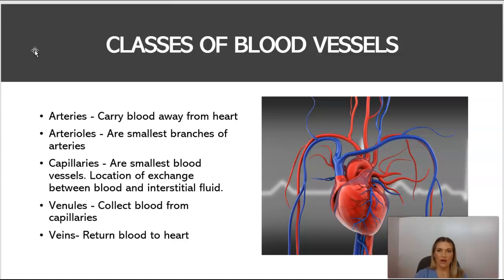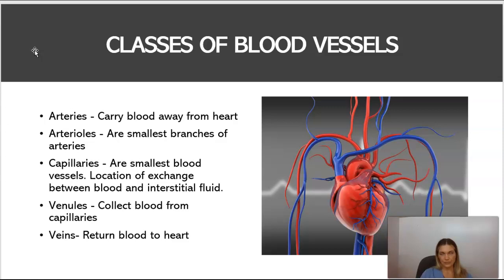Classes of blood vessels: arteries carry blood away from the heart. Arterioles are the smallest branches of the arteries. Capillaries are the smallest blood vessels and are the location of exchange between blood and interstitial fluid. Venules collect blood from the capillaries, and then the venules run to the veins, which return blood back to the heart.